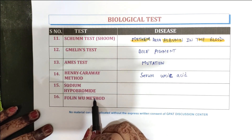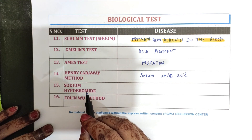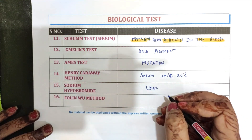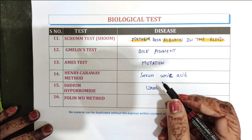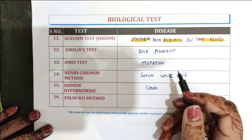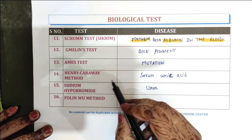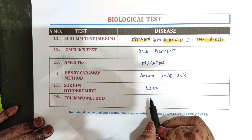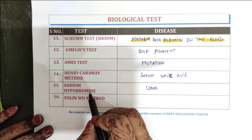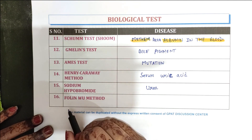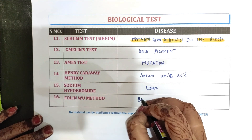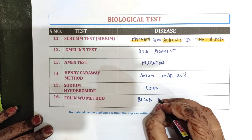The sodium hypobromide test is used to detect and estimate urea. The next one is the Fallen Vue method, and with the help of the Fallen Vue method, blood glucose can be estimated.